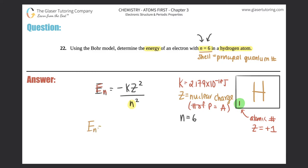So En equals negative 2.179 times 10 to the negative 18th times our z, which was a plus one, and that's squared, all over n, which is six squared. And six squared is the same thing as 36. So technically, this would be negative 2.179 times 10 to the negative 18th all over 36, because one squared is one.